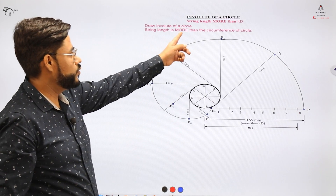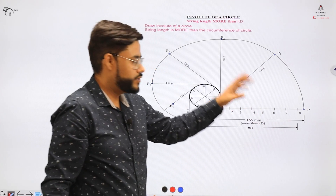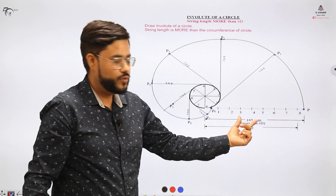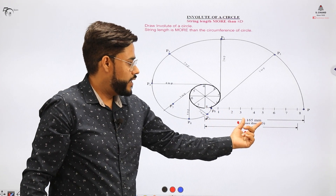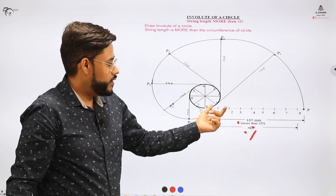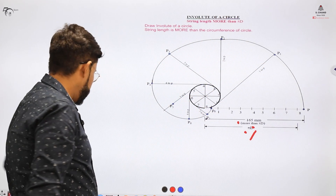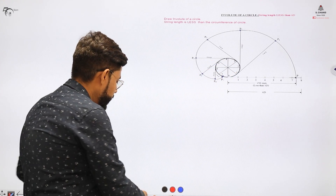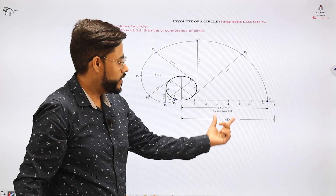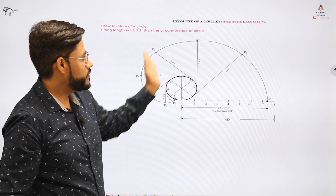Involute has cases where the given length is more than the circumference or less than the circumference. Irrespective of whether the length is more or less, the procedure remains the same. For example, if the length is 165, divide it into 8 equal parts, measure the parts, place them on the tangent, and draw the involute. Similarly for a length less than pi D, divide into 8 equal parts and cut values on the sections to form the involute.